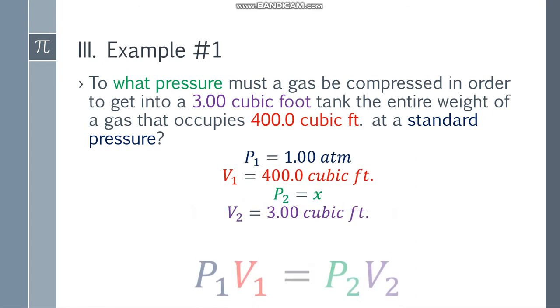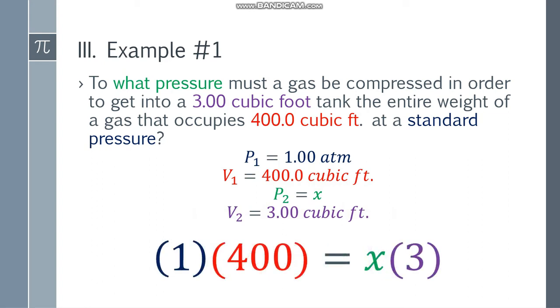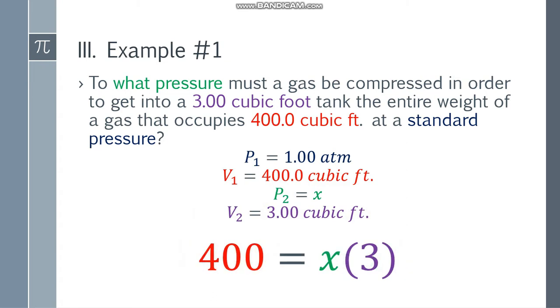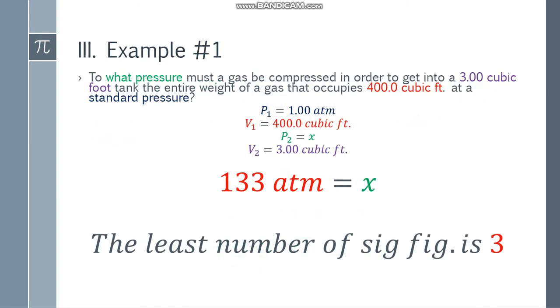The V1 or initial volume will be 400.0 cubic feet. Now, P2 is what we're looking for, X, because the question is to what pressure. And the resultant volume is 3.00 cubic feet. Now, let's have the formula: P1V1 is equal to P2V2. Substitute the values. We have 1 times 400 equals X times 3.